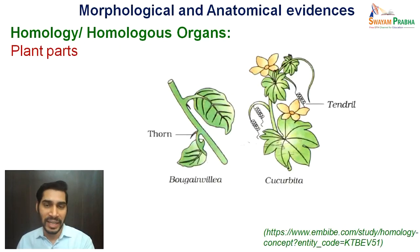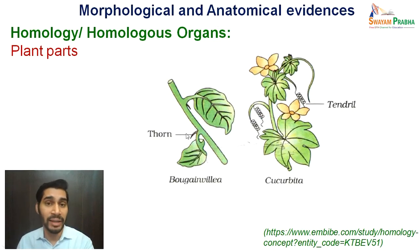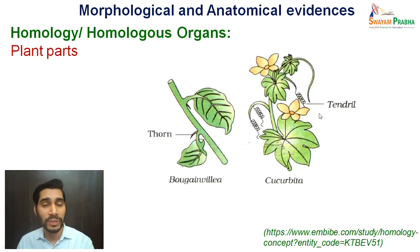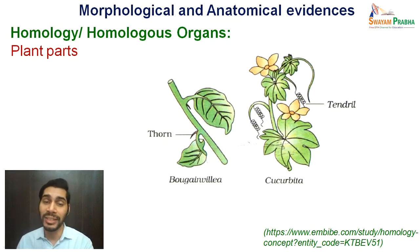Yet another example from plants: the thorns present in bougainvillea, if compared with the tendrils present in cucurbita, they may appear similar in structure but have different functions. The thorns in bougainvillea are protective in nature, whereas the tendrils in cucurbita are more of a supporting nature — providing support for climbing. Both arise from the axillary buds basically, so they have a common ancestry. They appear similar in structure but perform different functions, again indicating towards an evolutionary approach.